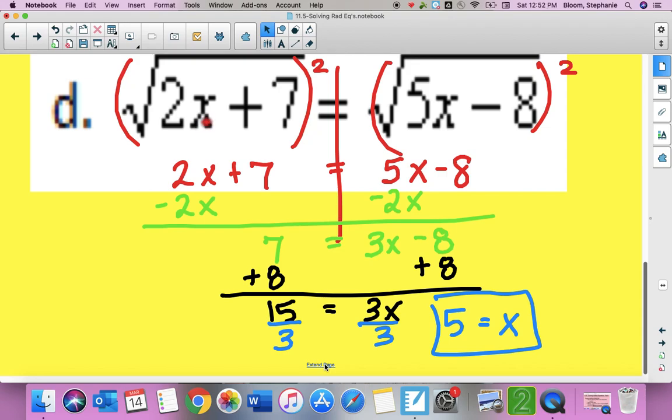And if I go back and check, plug in 5 right here for x. 2 times 5 is 10 plus 7 would be 17. Check over here. Plug in a 5. 5 times 5 is 25 minus 8 is also 17. And so it does, in fact, check.